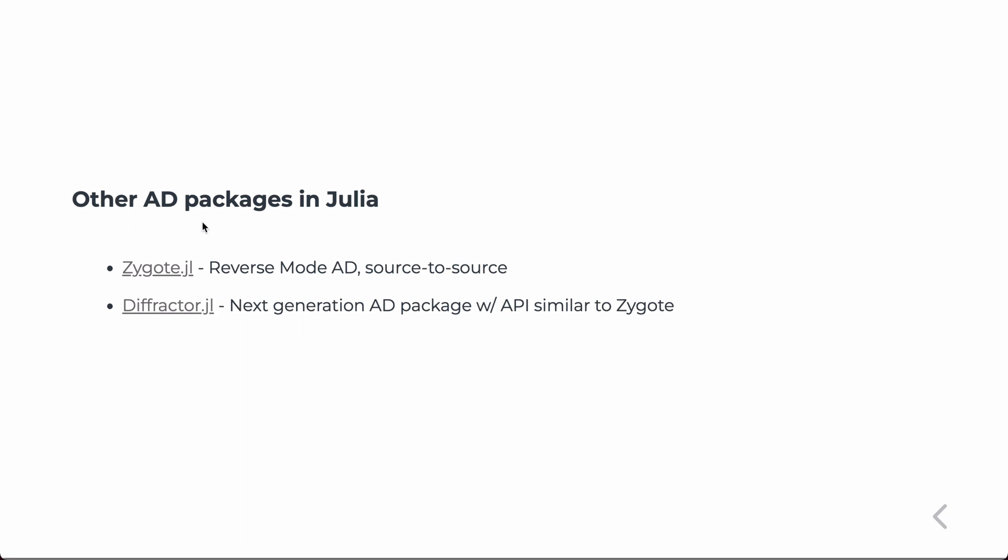Just to let you know, there's a couple of other AD packages in Julia. Zygote, which is the kind of standard reverse mode AD. And it does source to source transformation in the compiler, which means it's very efficient. So it actually takes the source code, and when it's compiled, it generates source code to compute the derivatives in reverse mode AD. And also be on the lookout for diffractor.jl, which is the next generation package. Both Zygote and diffractor.jl have a very similar API as the forward diff. So the way you actually use and call these functions are very similar in these libraries.